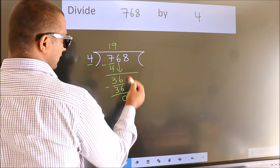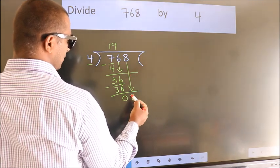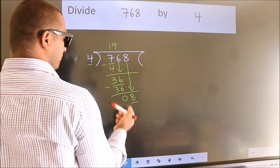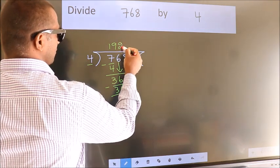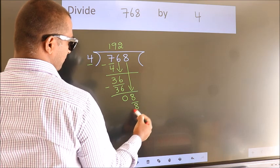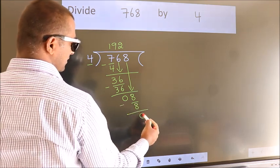After this, bring down the beside number. So, 8 down. So, 8. When do we get 8? In the 4 table, 4 twos, 8. Now we subtract. We get 0.